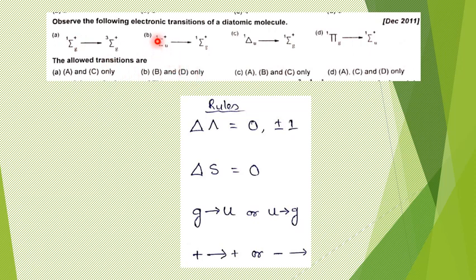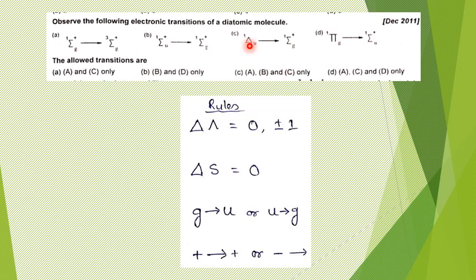For transition B: singlet to singlet is allowed. Σ to Σ gives ΔΛ = 0, which is allowed. Plus to plus is also allowed. Finally, u to g is allowed. With respect to all selection rules, transition B is an allowed transition.